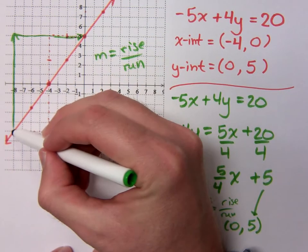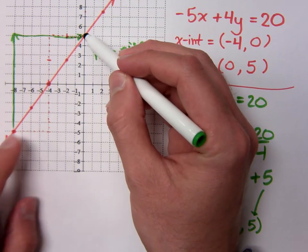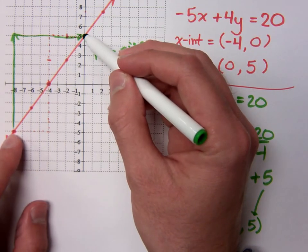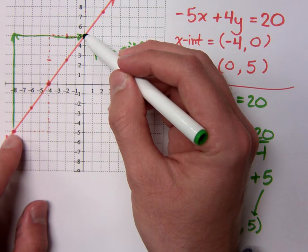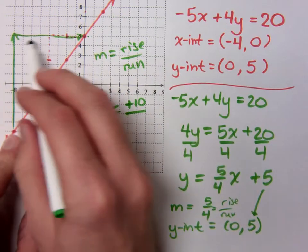How much is my rise from this point to this point? How many units did I go up? From here to here. I went up 10.